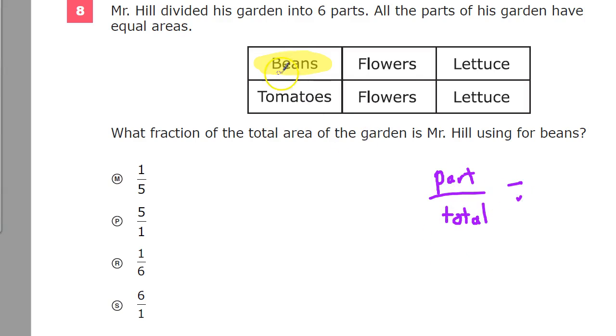So my total number of parts is, of course, 1, 2, 3, 4, 5, 6. It even says so right there. And how many of them are dedicated to beans? One. So 1 sixth of the garden is dedicated to beans, so I put 1 out of 6.